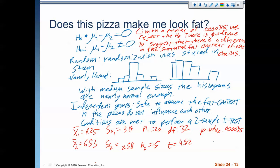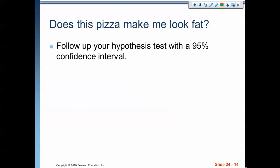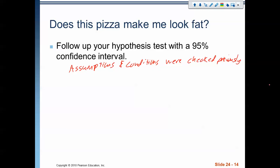There's the hypothesis test for the difference. Let's do a quick confidence interval and then we'll call it good. We're going to do a 95% confidence interval. Our assumptions and conditions were checked previously — if you need to do a hypothesis test and then a confidence interval on the AP test, it's okay to write this and only do the assumptions and conditions once.